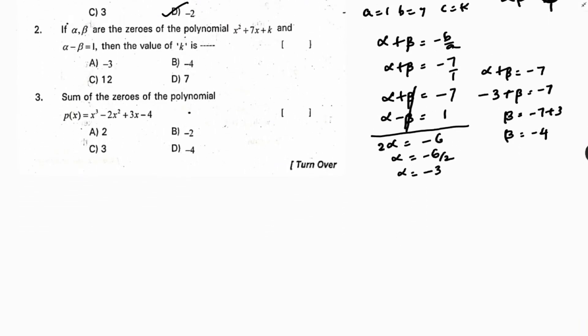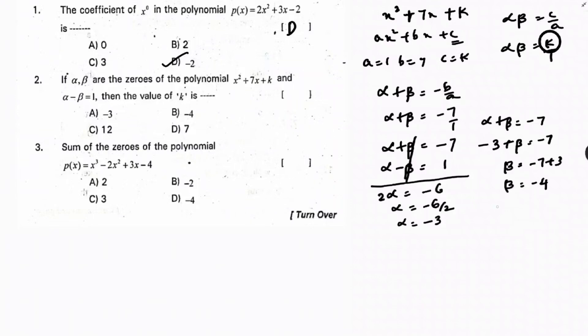Adding the two equations: 2·alpha = −6, so alpha = −3. Substituting back: −3 + beta = −7, so beta = −4. Therefore k = alpha × beta = (−3)(−4) = 12. The correct option is C.